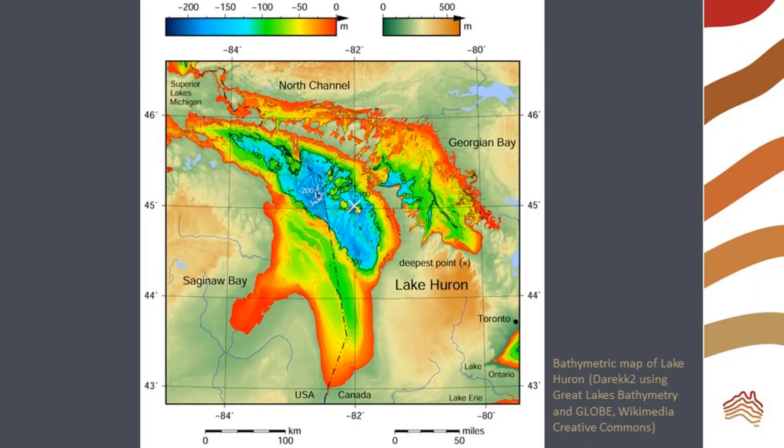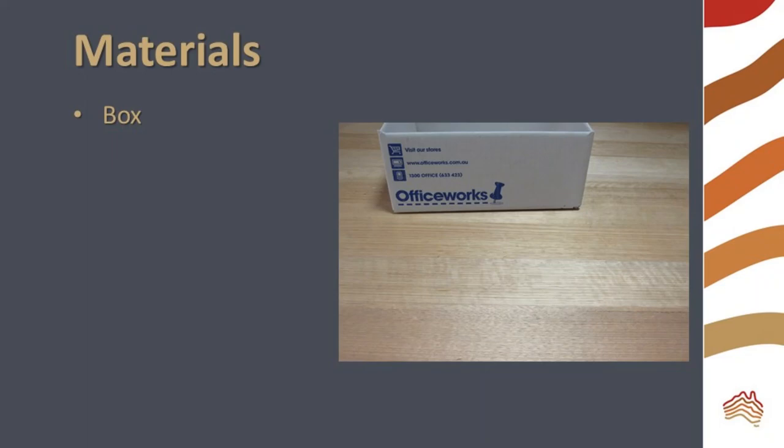Here is a map of Lake Huron in the USA with colored contour lines representing different depths. We are going to simulate sonar mapping.